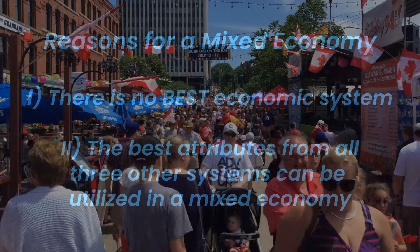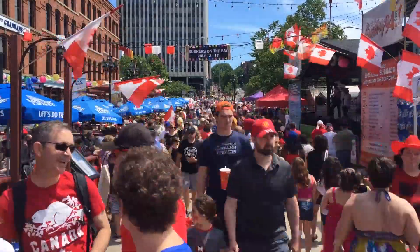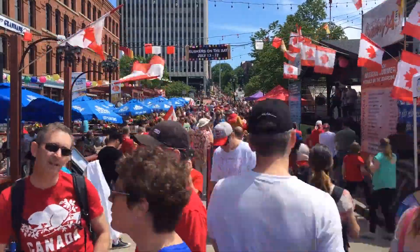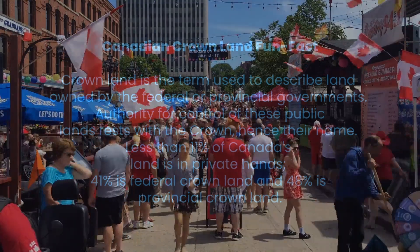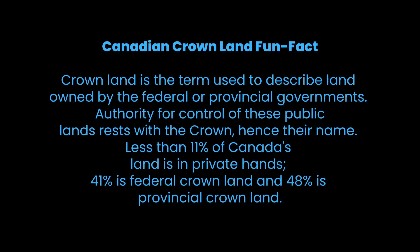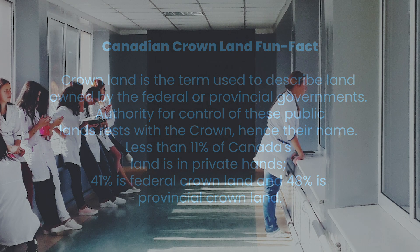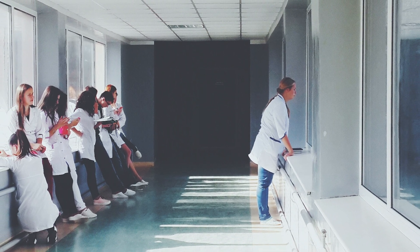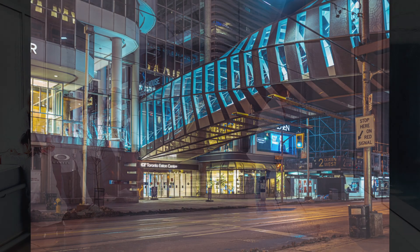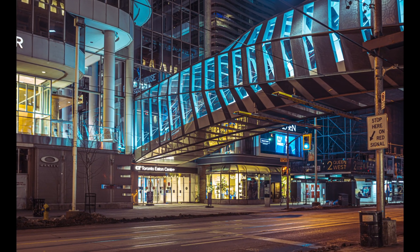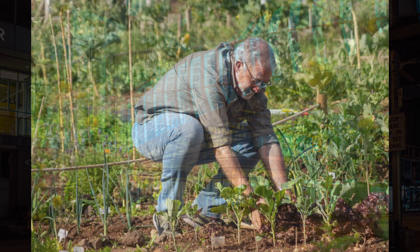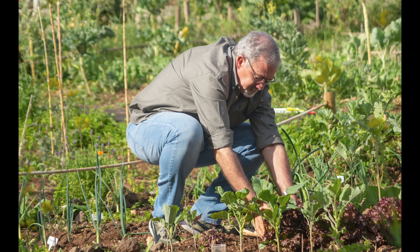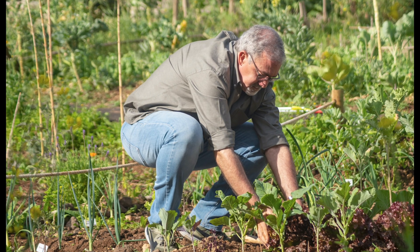An example of a mixed economy is Canada. The Canadian economy tries to integrate the best features of all three other types of economic systems. It allows for state-owned, or crown land, which represents elements of the command economy, but it also allows land to be privately owned, which represents market economy. Canada offers many government-run social programs — again, a feature of the command economy — but it also has plenty of free enterprise in other areas, which is market economy. Growing your own food and bartering is also becoming a growing practice in Canada, which demonstrates the traditional economy as well.